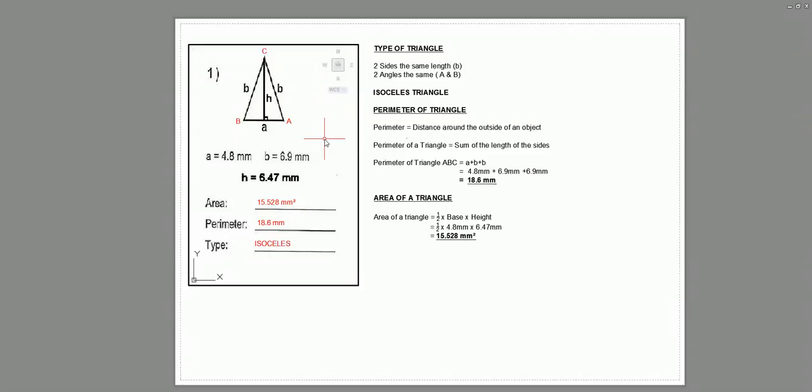In this case here, the perimeter of triangle ABC, remembering that we've got two sides, both the same length b, we can see here that the perimeter of the triangle will be 4.8, which is a, plus b, 6.9, plus b again, 6.9. Our units are millimeters, so we'll stick with the millimeters, add that all together, and we get 18.6 millimeters. Distance around the outside of the triangle ABC, also known as the perimeter.